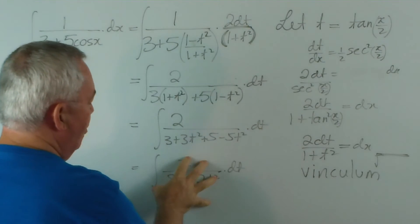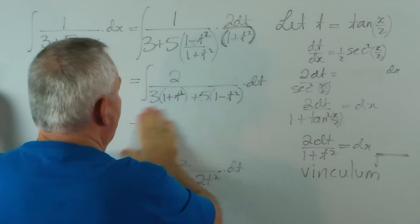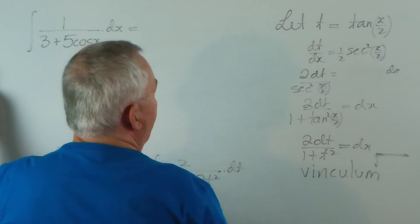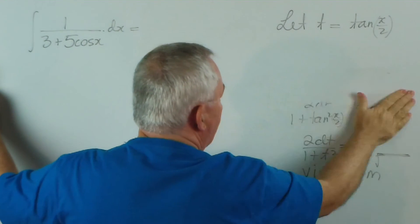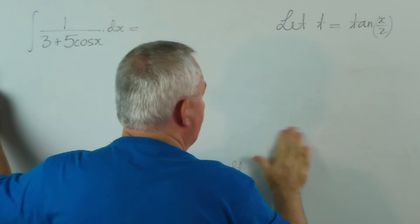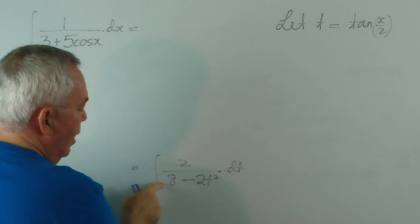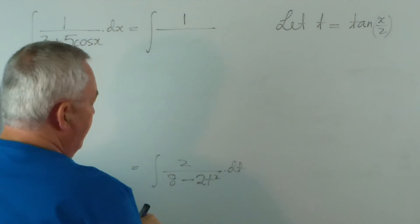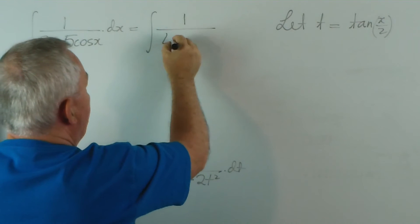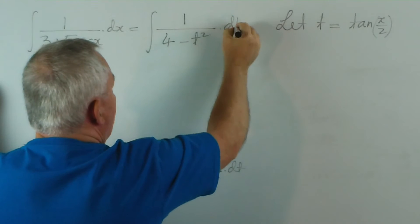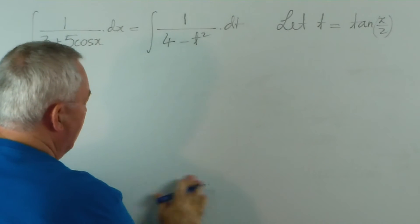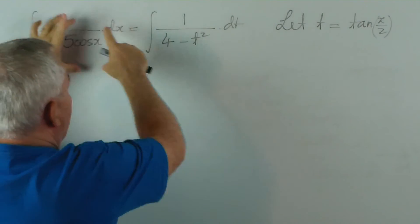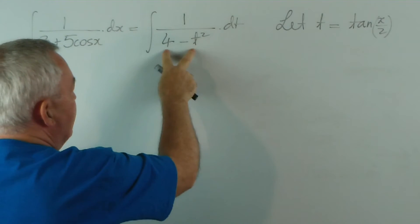We'll expand this denominator and see what we get. 3 plus 3t squared, this will be 5 minus 5t squared. That will give us the integral of 2 on—3 plus 5 is 8—and 3t squared minus 5t squared is minus 2t squared. Running out of board, I'm going to copy this up here. I'm going to divide the numerator and denominator by 2 as I do it. So we've got the integral of 1, and half of this is going to be 4 minus t squared dt.